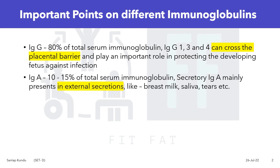Second is IgA. It constitutes 10 to 15% of the total serum immunoglobulin. There are mainly two types: serum IgA and secretory IgA. Secretory IgA is mainly present in external secretions like breast milk, saliva, tears, etc.